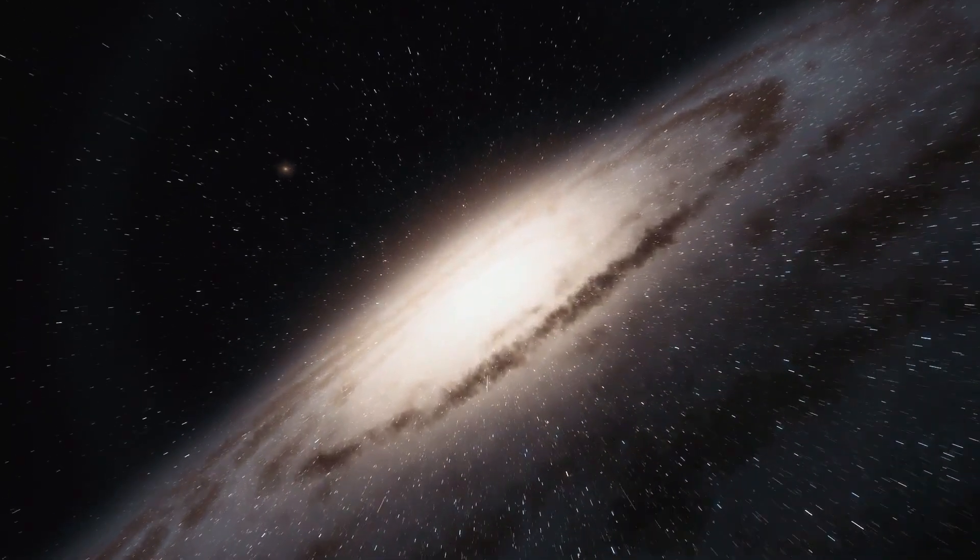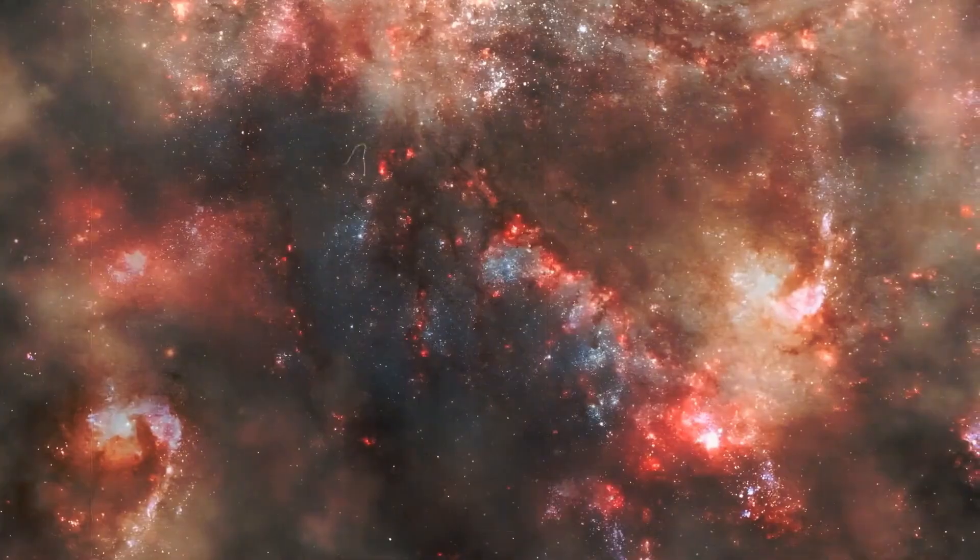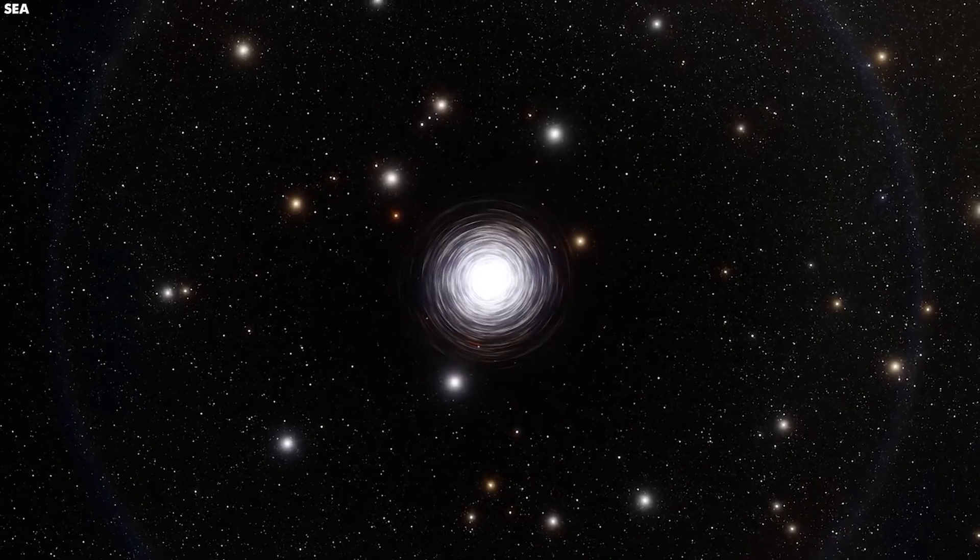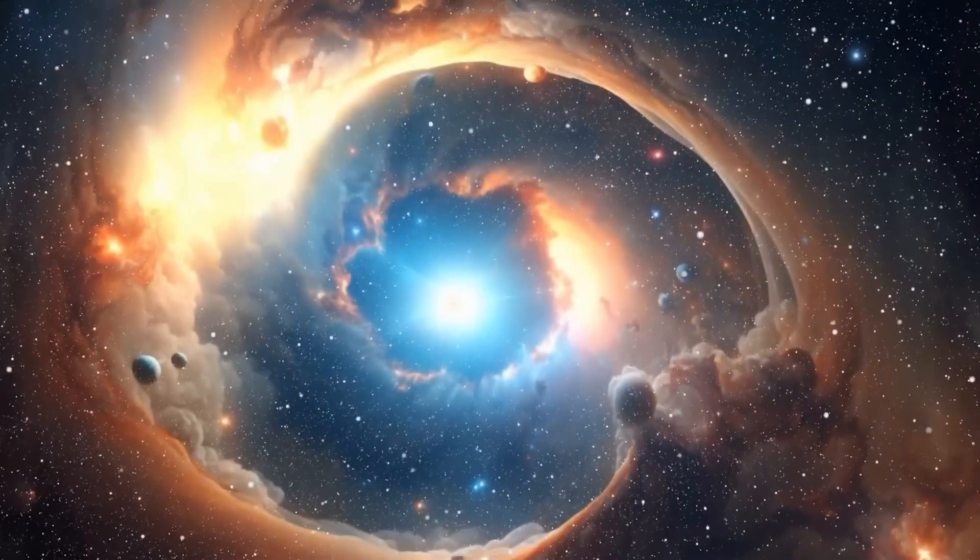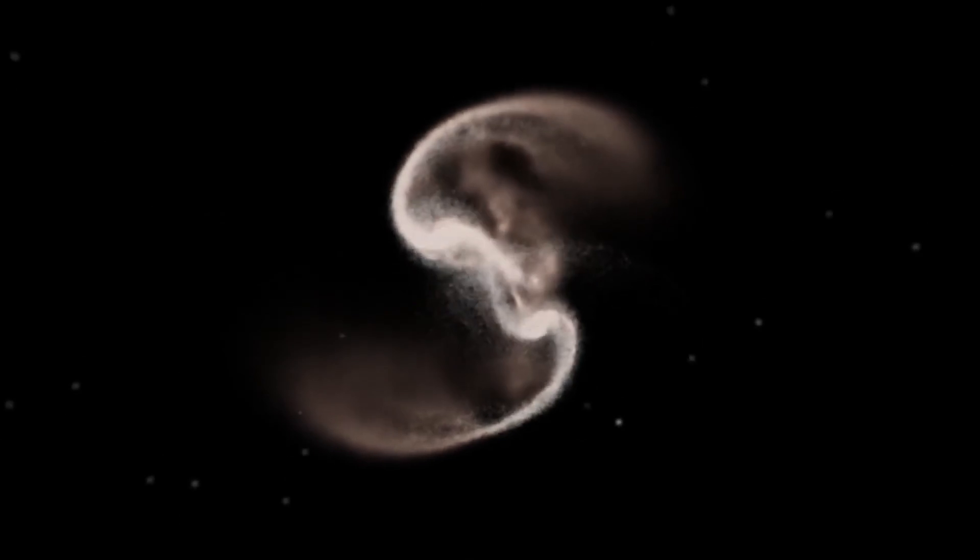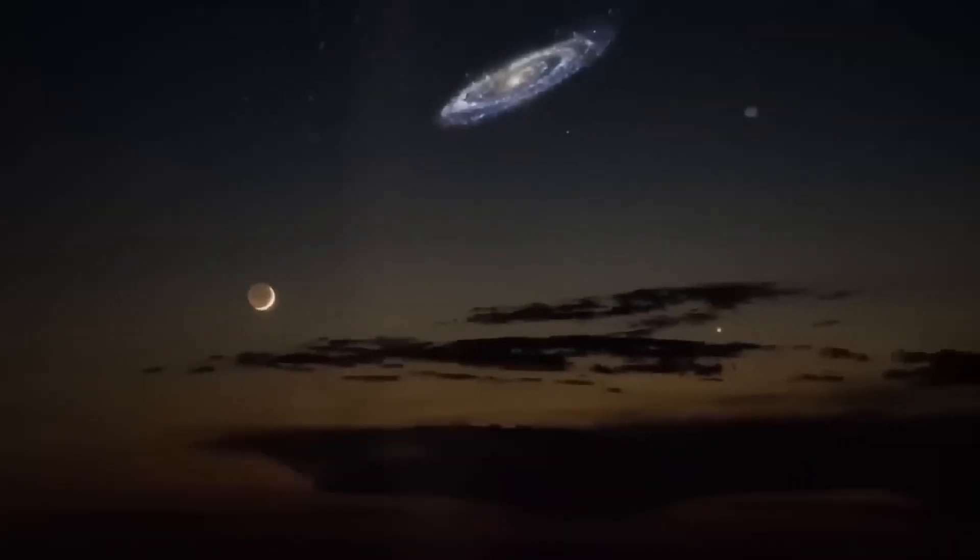Furthermore, Andromeda isn't alone in space. It's enveloped in a vast halo of stellar matter stretching hundreds of thousands of light-years. This halo comprises stars, planetary nebulae, and globular clusters, offering a look into the galaxy's detailed history and formation process.